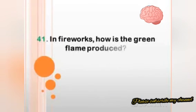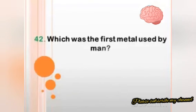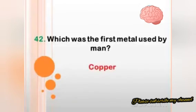In fireworks, how is the green flame produced? Answer: because of barium. Which was the first metal used by man? Answer: copper.